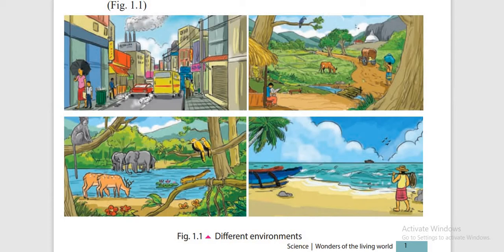The second picture is the village. You can see the paddy fields or many other fields, shops and the river, the big trees, a bird in it, cattle, men, cows, houses, mountains and temples.